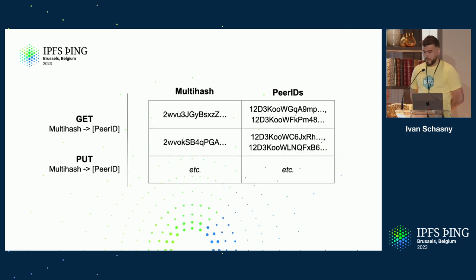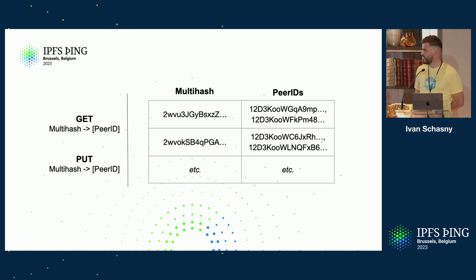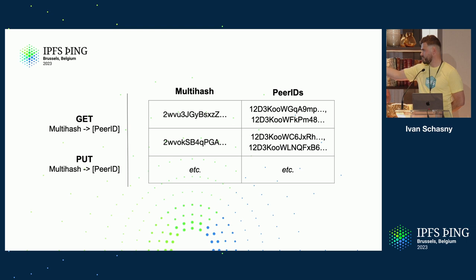To simplify, you can imagine IPNI as just two endpoints: a GET endpoint where you send a multihash and get back a list of provider records, and a PUT endpoint where you put a multihash with a list of provider records assigned to it — like a big hash map.